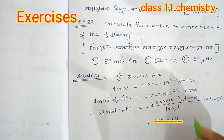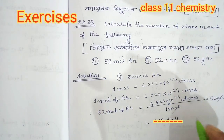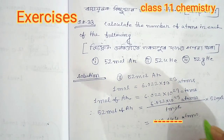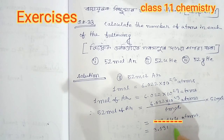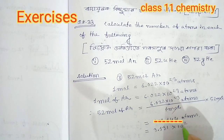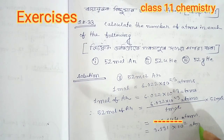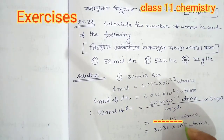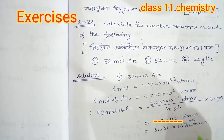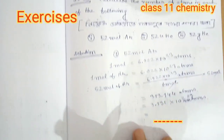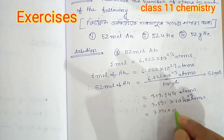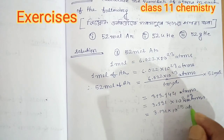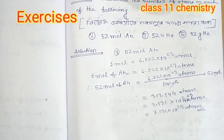One point four four — for one atom. So the number of atoms: three point one three one into 10 to the power 25 atoms. Three one three one into 10 to the power 25 atoms.